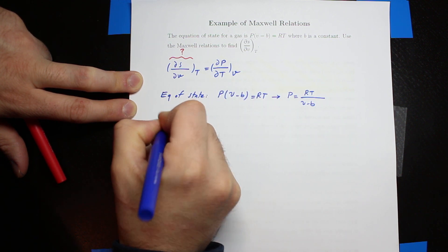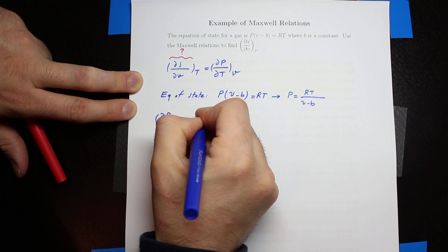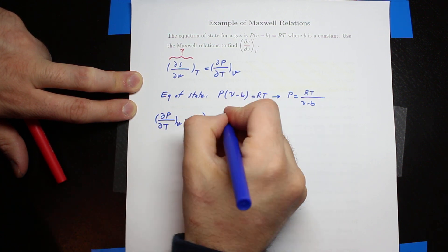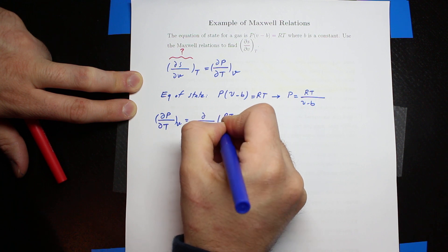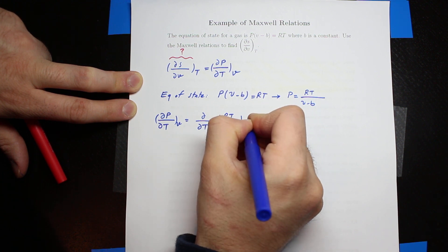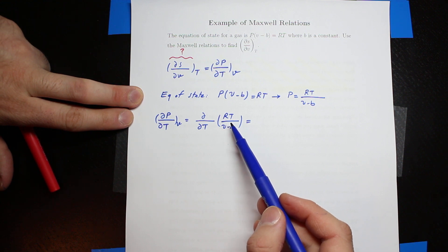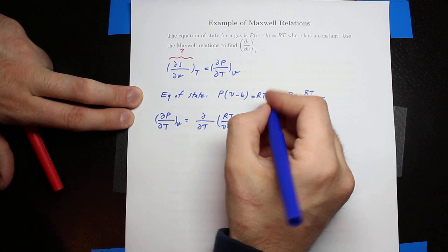So ∂P/∂T when the volume is constant is ∂/∂T of RT/(V-B). Basically we are getting the derivative of the right-hand side with respect to temperature.